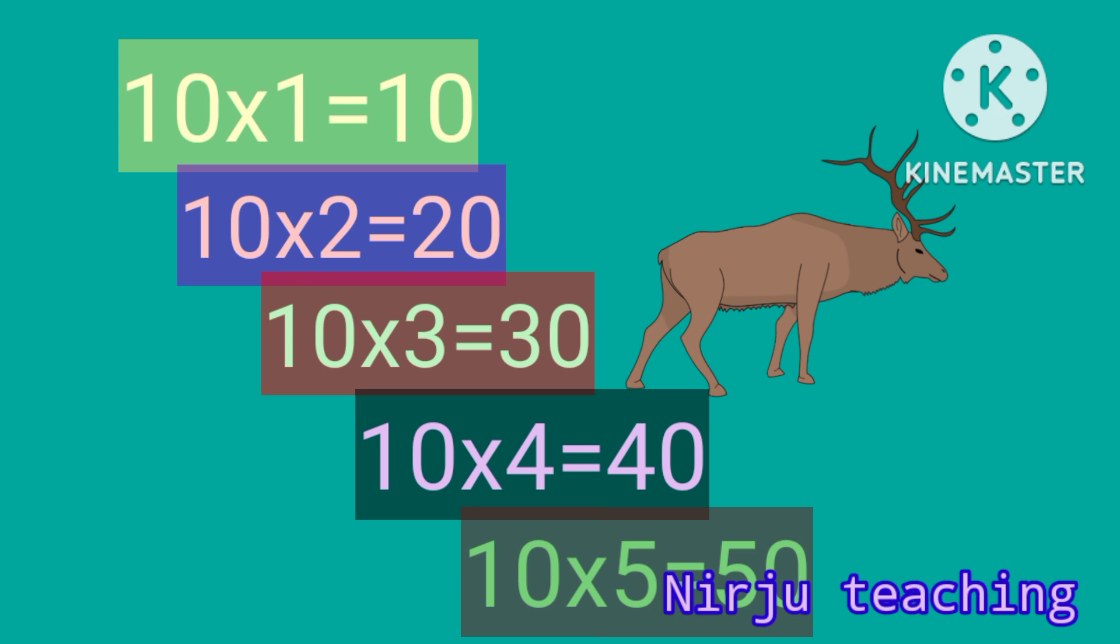Ten times 1 is 10, ten times 2 is 20, ten times 3 is 30, ten times 4 is 40, ten times 5 is 50.